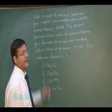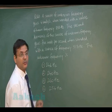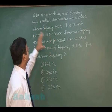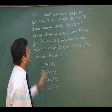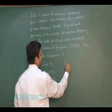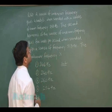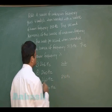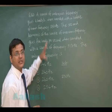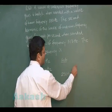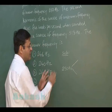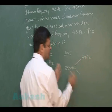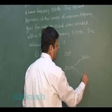Question 160 is based on beats in sound waves. A source of unknown frequency gives 4 beats per second when sounded with a known source of 250 Hz. The unknown frequency is therefore either 250 − 4 = 246 Hz or 250 + 4 = 254 Hz. We must determine which is correct using additional information.